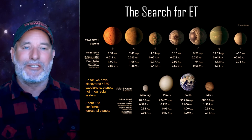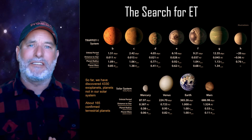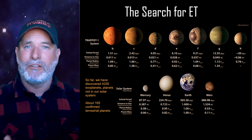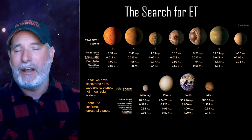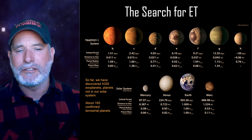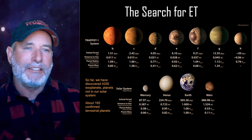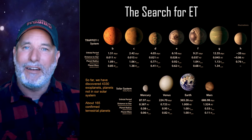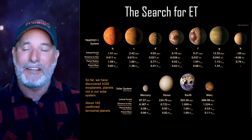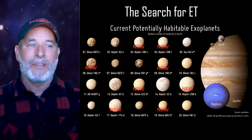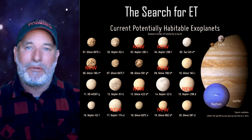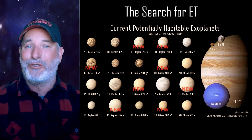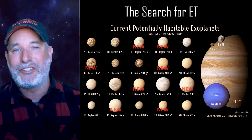Outside our solar system, we're finding new planets at an increasing rate — doubling the number of known planets about every two years. Right now we have about 165 terrestrial planets. If we can find oxygen in the atmosphere of one of these potentially habitable exoplanets, that would be pretty amazing. We are really in a golden age of exploration.